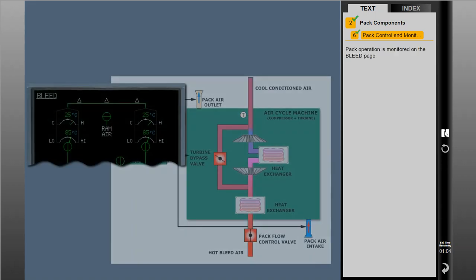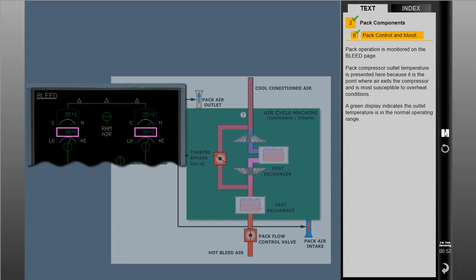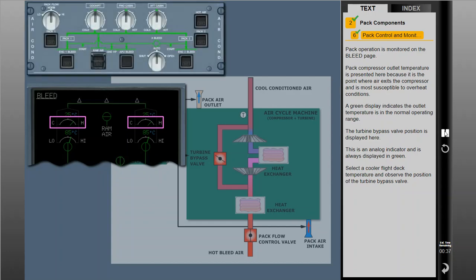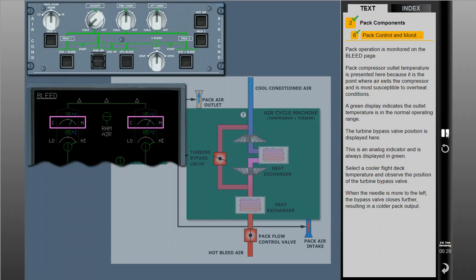PAC operation is monitored on the bleed page. PAC compressor outlet temperature is presented here because it is the point where air exits the compressor and is most susceptible to overheat conditions. A green display indicates the outlet temperature is in the normal operating range. The turbine bypass valve position is displayed here as an analog indicator, always shown in green. When the needle is more to the left, the bypass valve closes further, resulting in a colder PAC output.